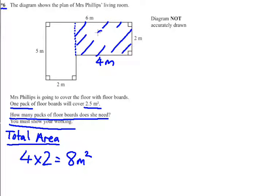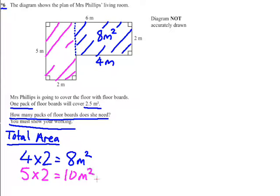So now we need to work out the rectangle on the left which I'm going to color in pink. And that's 5 x 2 so 5 times 2 is 10m². I'm just going to write that in. 10m².